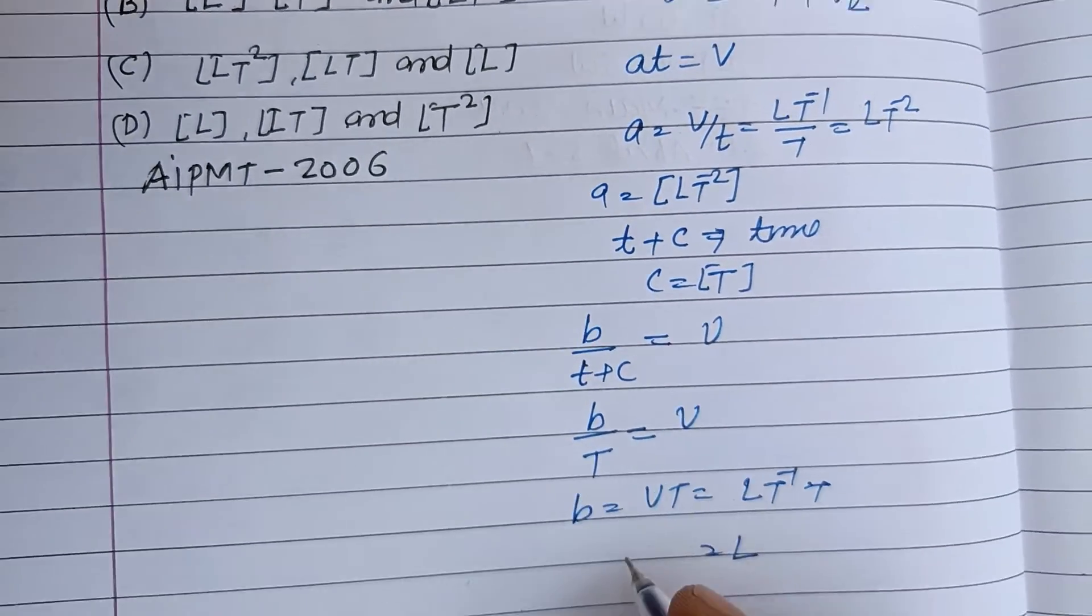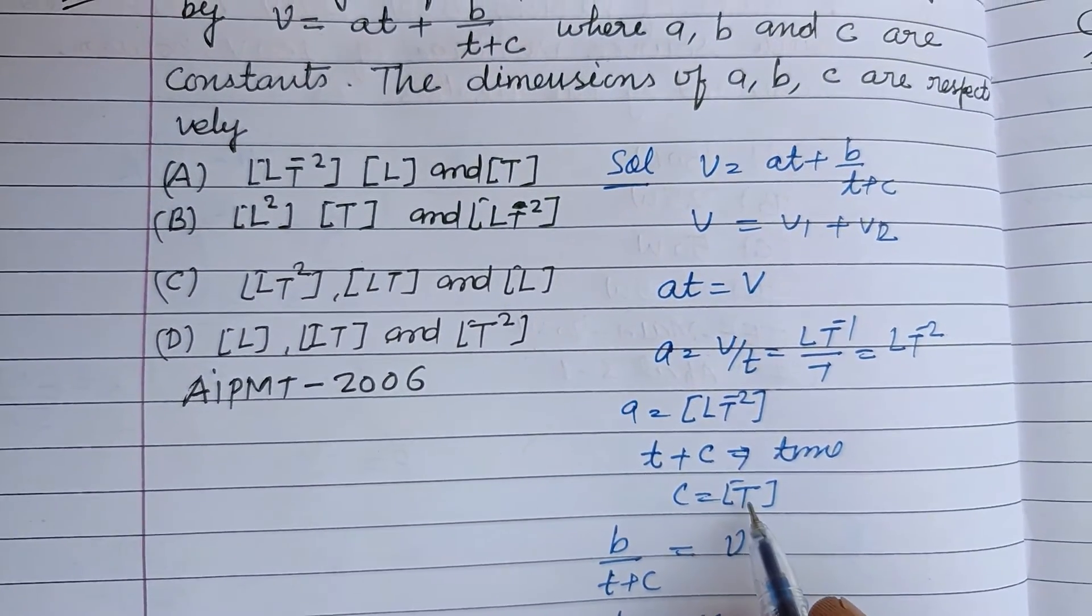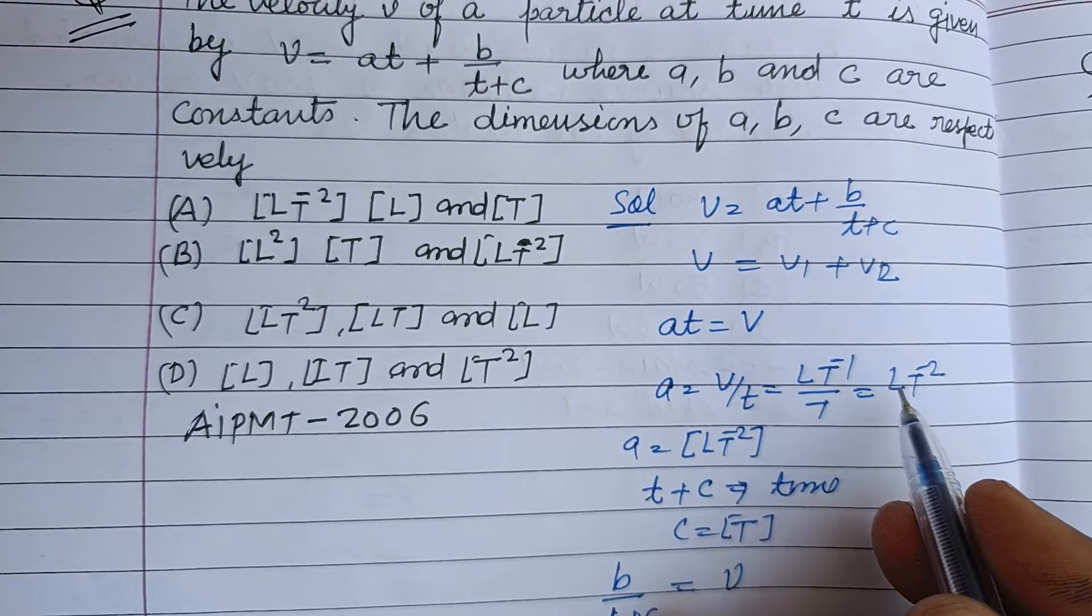Therefore dimension of b is L, dimension of c is T, and dimension of a is L T^-2.